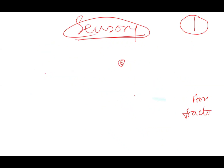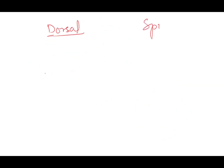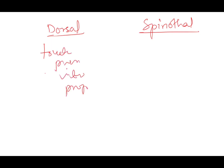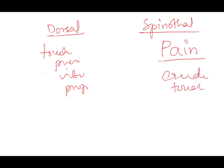There are two different kinds of sensory tracts. One is the dorsal column and the other is the spinothalamic tract, which is further divided into anterior and lateral spinothalamic tracts. They exist because they carry different sensations. The dorsal column carries fine touch, pressure, vibration, and proprioception, whereas the spinothalamic tract carries pain, crude touch, and temperature.